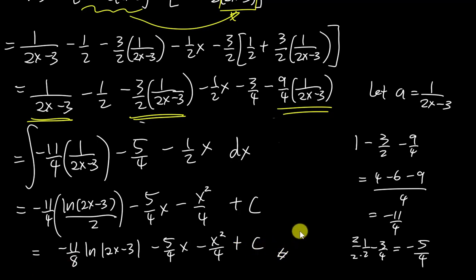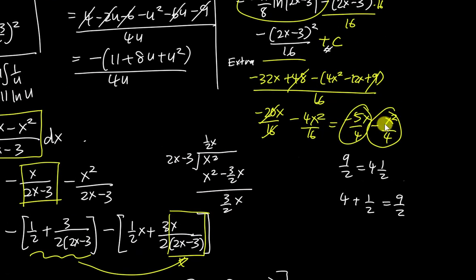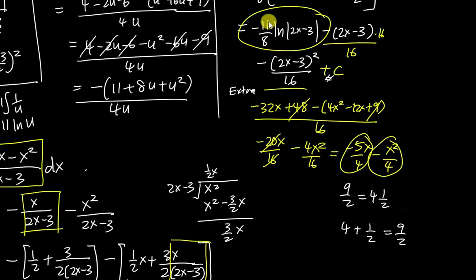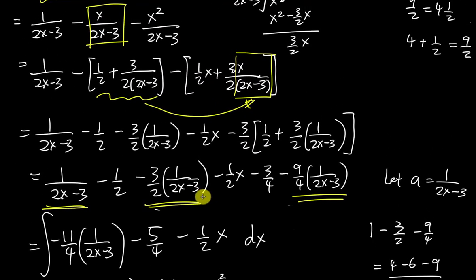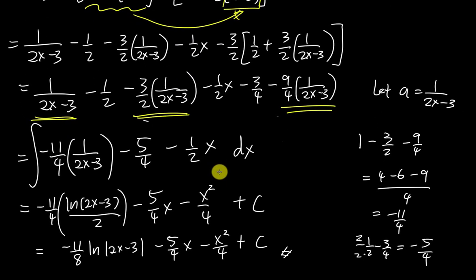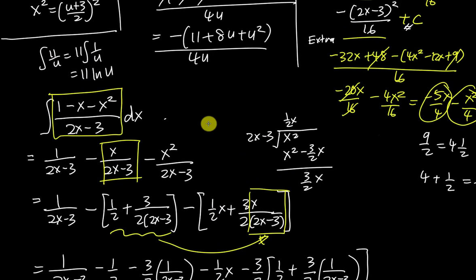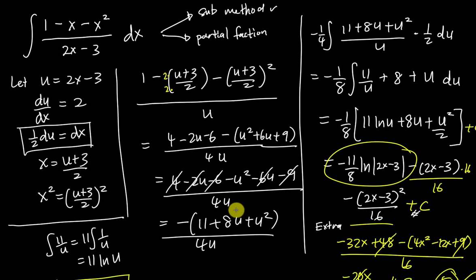Both methods give the same answer: -11/8 · ln|2x-3| - 5x/4 - x²/4 + C. This is how we solve this kind of question — the algebra is quite involved, but it's all algebraic manipulation. If you know a faster or smarter method, please share! I hope you enjoyed this video and I'll see you in the next one.